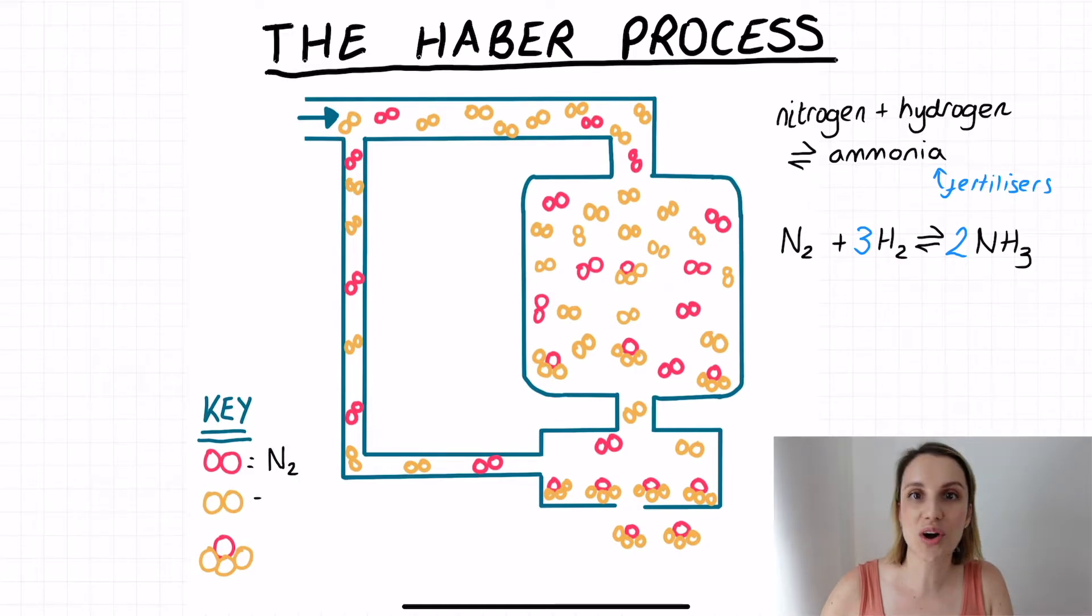In the bottom left here I've got a key for my diagram, so you can see the pink circles represent nitrogen, the yellow ones hydrogen, and the combination of the two is your NH3 or ammonia.